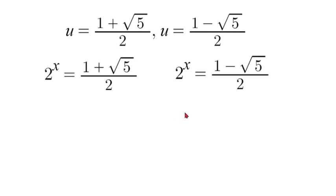Now something we need to recognize right off the bat to save ourselves some time is that our 1 minus square root of 5 over 2 is going to give us a negative value. 1 minus square root of 5 is going to be negative. And we should know that any value for x in an exponent will not make 2 a negative value.